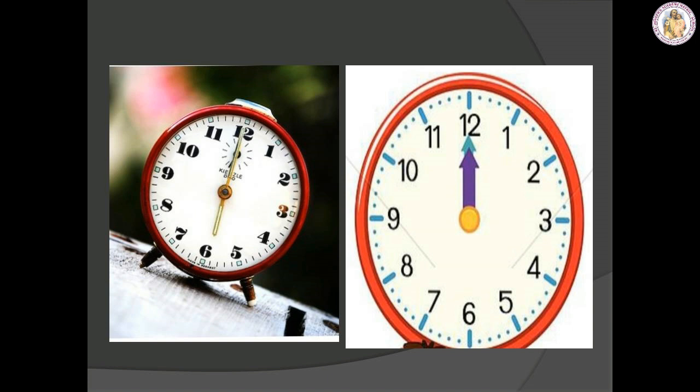How to read the time. Can you see the first picture? The bigger hand is the minute hand — it is always on 12. The smaller hand is on 6, so the time is 6 o'clock. In the next picture, both hands are on 12, so the time is 12 o'clock. We already studied this in 4th standard — this is a recalling session.